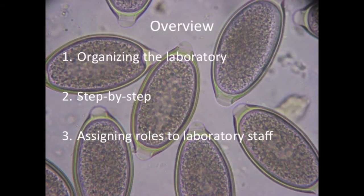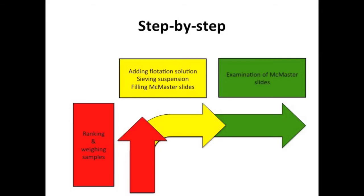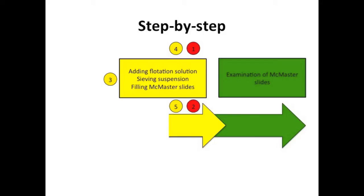3. Assigning roles to the people in the laboratory. We have illustrated the three steps to process stool samples using the McMaster egg counting method. Now we will continue with the different roles assigned to the people in the laboratory. In the setup presented, we work with six people who shift from one step to another as samples are being processed. We start with two people at table 1 for weighing the samples, indicated in red. Once a sufficient number of samples are weighed, a third person adds the flotation solution on table 2. A fourth and fifth person sieve the suspension, indicated in yellow. As soon as all samples have been weighed, the two people from step 1 move to table 2 and start filling the McMaster slides.